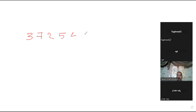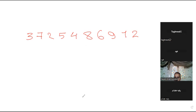Can you help me, Rukaya? The number is 3,725,486,912. Three billion, seven hundred million, four hundred eighty-six thousand, nine hundred twelve. Good!